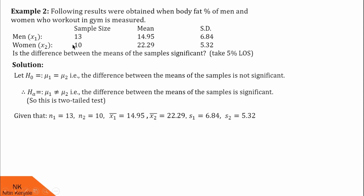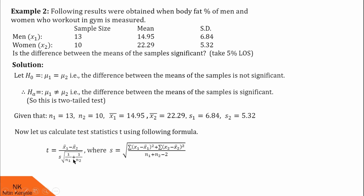Next, we will note down the given data. Here n1 is 13, n2 is 10, x1 bar is 14.95, x2 bar is 22.29, s1 is 6.84 and s2 is 5.32. Let us use this data to calculate the test statistic using the T formula: x1 bar minus x2 bar, divided by s into under root (1/n1 plus 1/n2). x1 bar, x2 bar, n1 and n2 are already given. We need to calculate s using the standard formula.